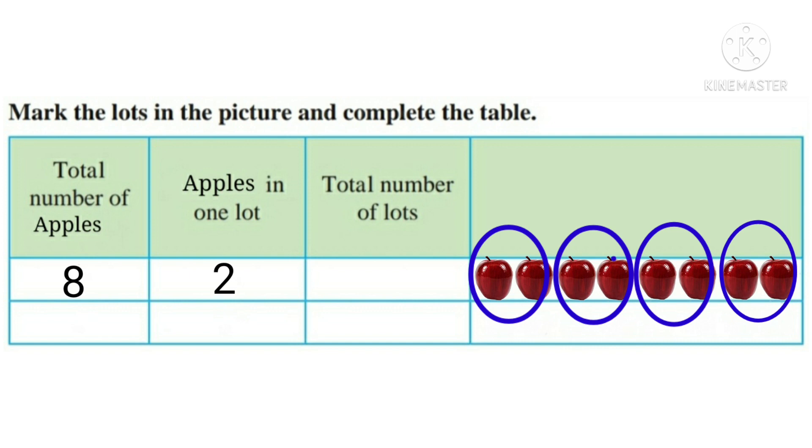There are 4 lots, so here in the total number of lots we will write 4 lots. So this is the first lot, second lot, third lot, and this is the fourth lot. It means if we say the table of 2, then 8 comes at 2 ones are 2, 2 twos are 4, 2 threes are 6, and 2 fours are 8. So 8 comes at 4th place. In this way, we have divided 8 apples in 4 lots. Each lot has 2 apples.